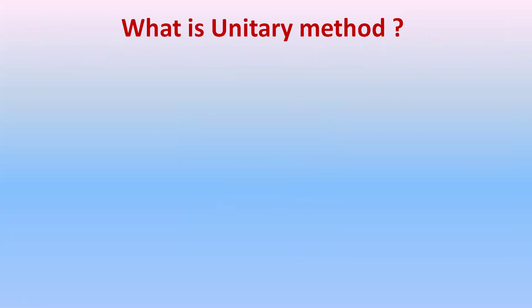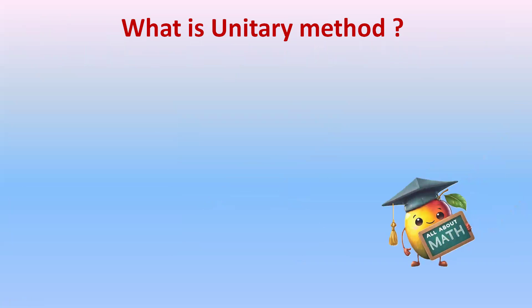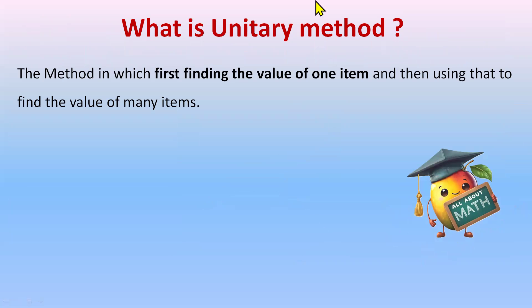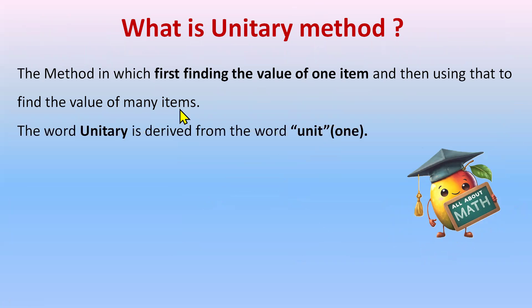What is unitary method? It is the method in which we first find the value of one item and then use that to find the value of many items. The word unitary is derived from the word 'unit,' which means one. So unitary method is a method where we find the value of one item and then find the value of many items.